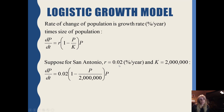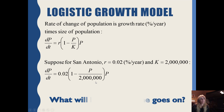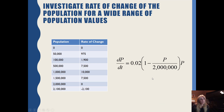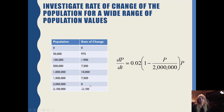Suppose for San Antonio we have a growth rate of 2% per year and a carrying capacity of 2 million. What will happen as time goes on? As we see with the table, it starts to grow very quickly — that exponential growth — but then it starts to level out at the carrying capacity.